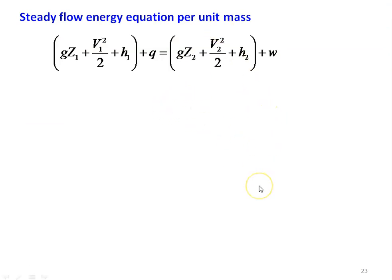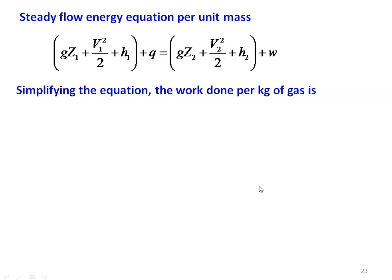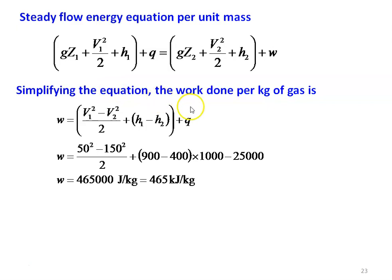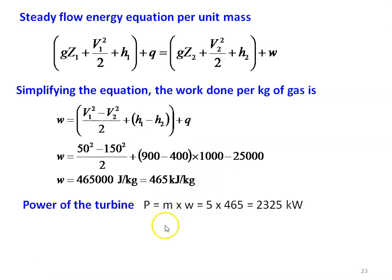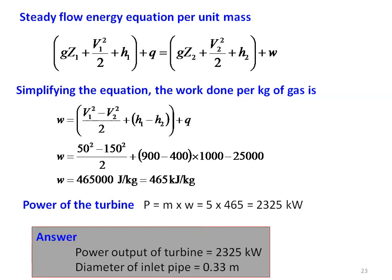Writing the steady flow energy equation per unit mass and simplifying — the Z value is not given, so we drop it. W = (V1² − V2²)/2 + (H1 − H2) + Q. Substituting: (50² − 150²)/2 + (900 − 400) × 1000 − 25,000 = 46,000 J/kg, i.e., 46 kJ/kg work done per kg of gas. Power of the turbine = M × W = 5 × 465 = 2325 kW. Answers: power output of the turbine is 2325 kW and diameter of the inlet pipe is 0.33 m.